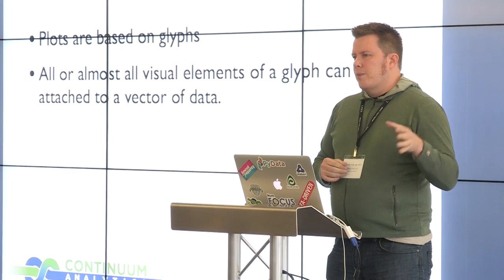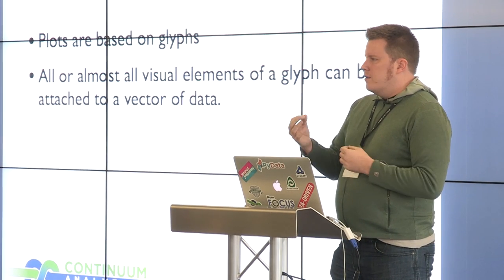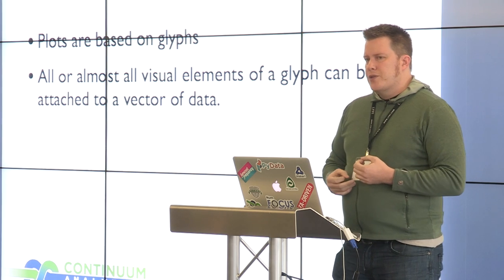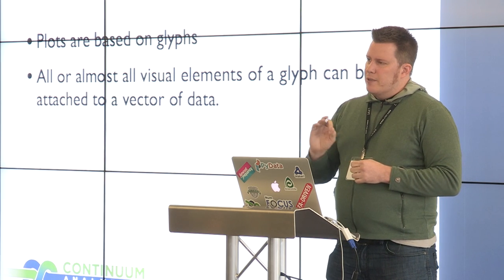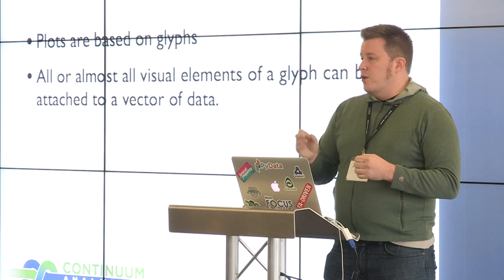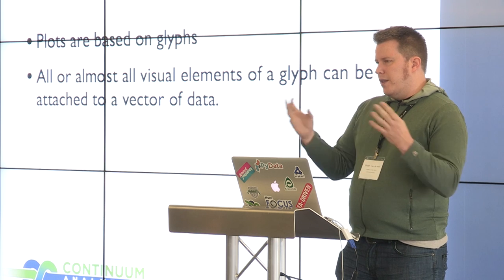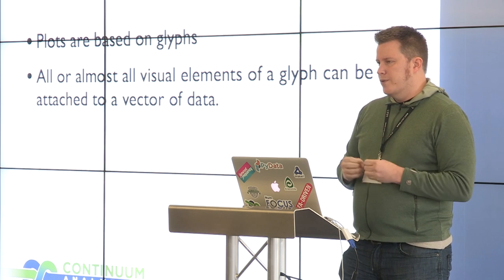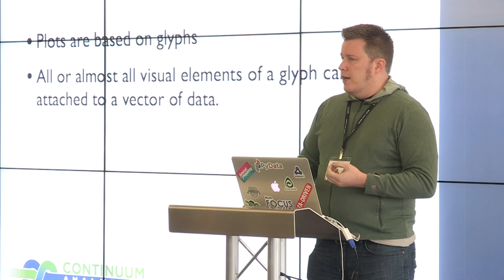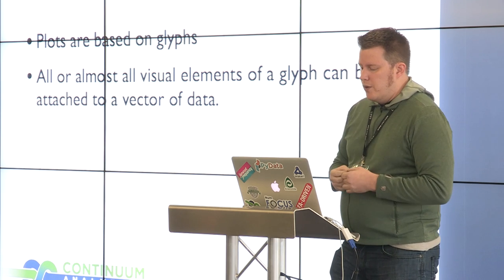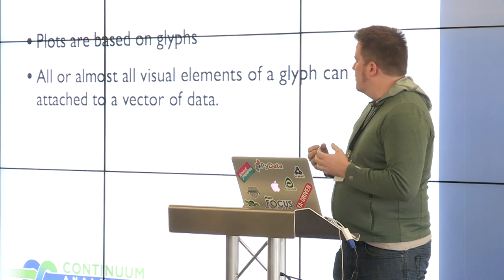At the high level, every plot element is represented by a glyph — some visual element that you can scatter across the screen. In a certain sense, all Bokeh plots are scatter plots. We take a lot of inspiration from Leland Wilkinson's Grammar of Graphics. For every visual element, you should be able to tie the properties of that visual element to data or a series of data. For instance, you can scatter polygons and set visual properties of each polygon independently, mapping them automatically into a color space.